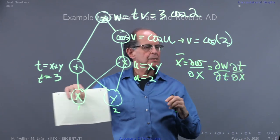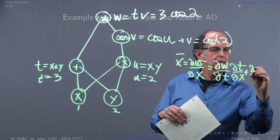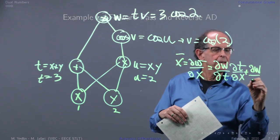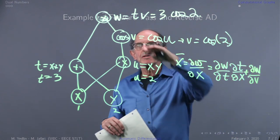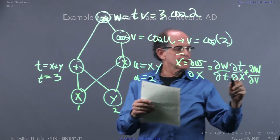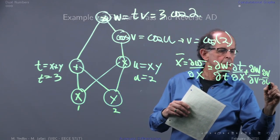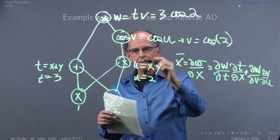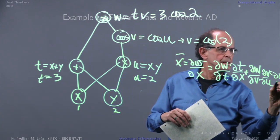We use the chain rule: dw/dt times dt/dx from the left branch, plus dw/dv times dv/du times du/dx going this way, from here to here, then finally du/dx.